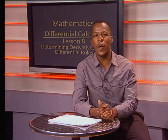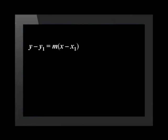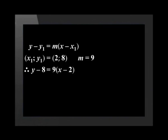Our last step is to use the equation of a straight line: y minus y1 equals m bracket x minus x1, and substitute the value of the given point and the gradient. x1 and y1 is equal to 2 and 8, and the gradient m is equal to 9. Therefore, y minus 8 equals 9 bracket x minus 2 close bracket. y minus 8 equals 9x minus 18. Adding 8 on both sides of the equation gives us y equal to 9x minus 10. This is the equation of the tangent at the point (2, 8).